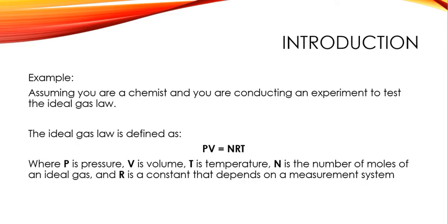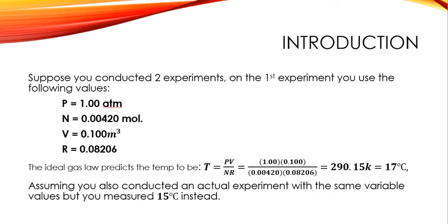You don't have to worry if you don't know any chemistry. This is just a brief demonstration. So, suppose you conducted two experiments. On the first experiment, you used the following values. These are the following values you used. And you solve this using the ideal gas law and acquire a temperature of 17 degree Celsius.